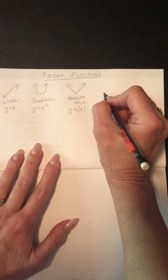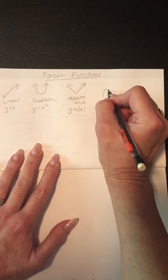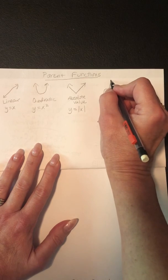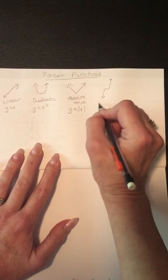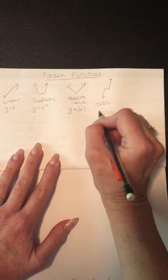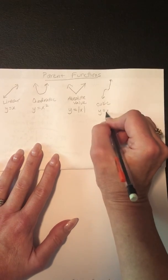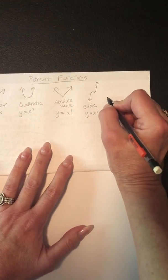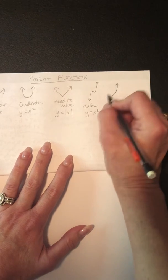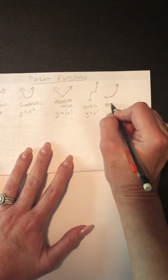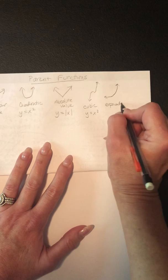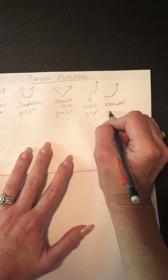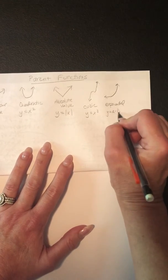And then there's cubic. And cubic, obviously, is y equals x to the third. And then there's exponential. And that's like y equals a times b to the x.